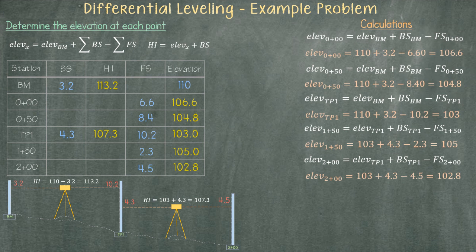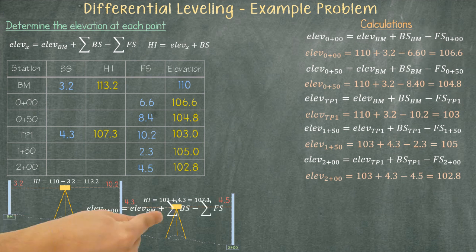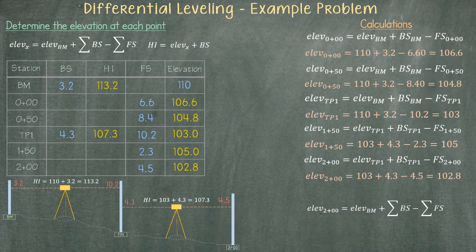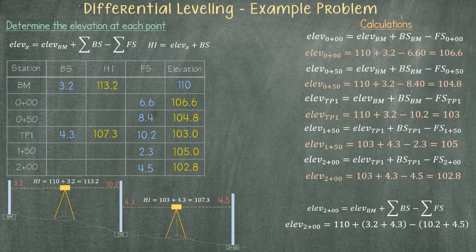A short way of calculating the elevation at station two plus zero zero is by using the first equation that we pulled out at the beginning. The equation will look as follows just for this specific location. Now we just plug in the numbers and solve.